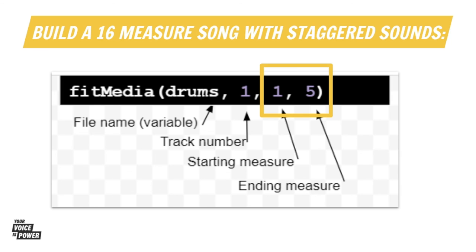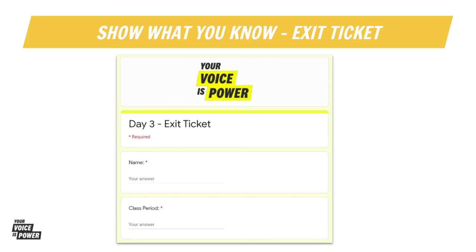You're going to use the directions in your document to help you. You've already built an eight-measure song — we're just going to double that by creating another function for your verse one and including at least five more tracks and at least eight more measures. Awesome work today, class. You built a 16-measure song with your own tempo and got to know many awesome entrepreneurs that have been setting their own tempo already.